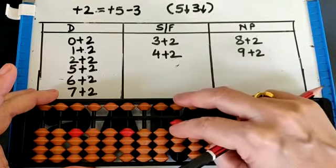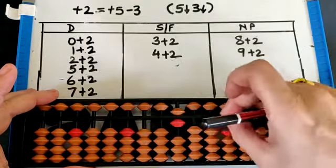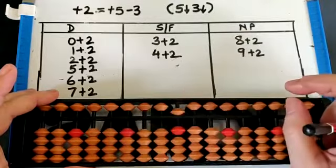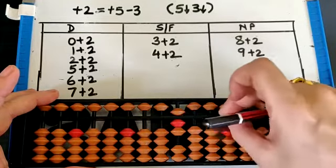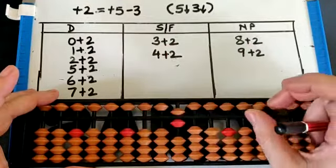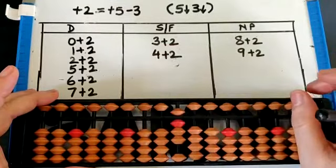Now 5 plus 2, two beads are available so we can do it directly, that is 7. 6 plus 2, again two beads are there so directly, that is 8. 7 plus 2, directly.